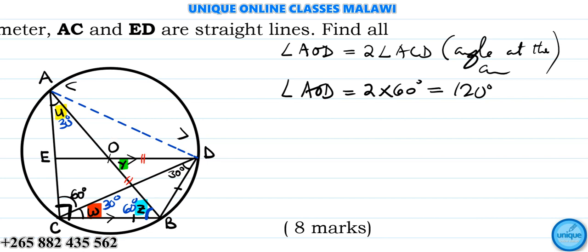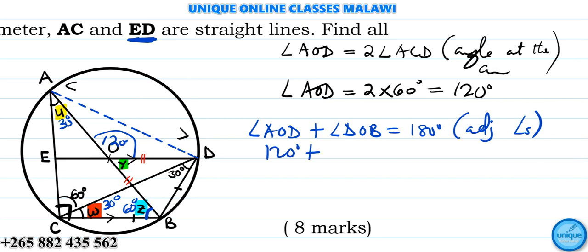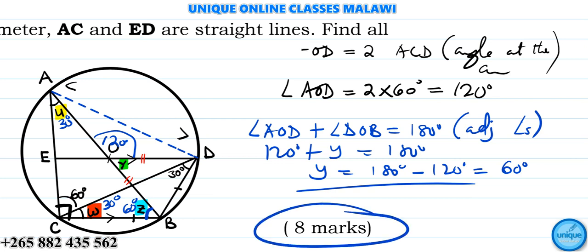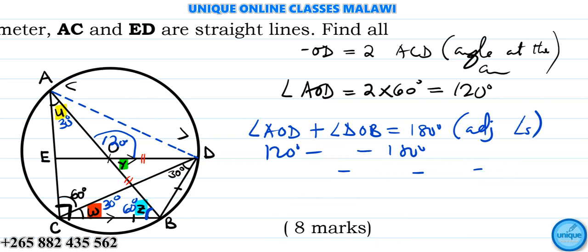Since ED is a straight line and we have 120 degrees, angle AOD plus angle Y equals 180 degrees. Reason: angles on a straight line. This means 120 degrees plus Y equals 180 degrees. So Y equals 180 degrees minus 120 degrees, which is 60 degrees. That's how it is, my guys.